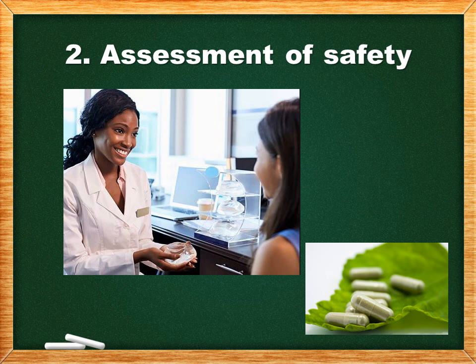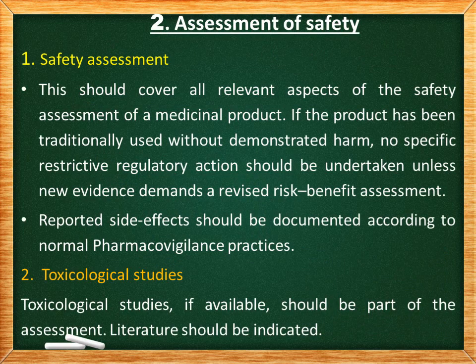Assessment of safety: regulatory safety assessment of herbal medicinal products is very important, including adverse reactions and toxicity information. The safety assessment should cover all relevant aspects of the safety of the medicinal product. If the product has been traditionally used without demonstrated harm, no specific restrictive regulatory action should be undertaken. However, new evidence demands a revised risk-benefit assessment, and reports of side effects should be documented according to normal pharmacovigilance practices. Toxicological studies, if available, should be part of the assessment and the literature should be indicated.